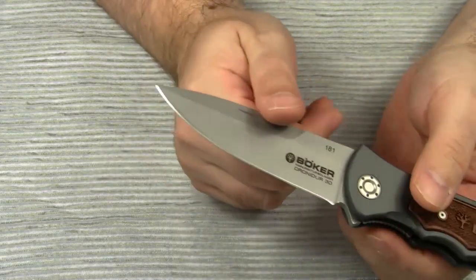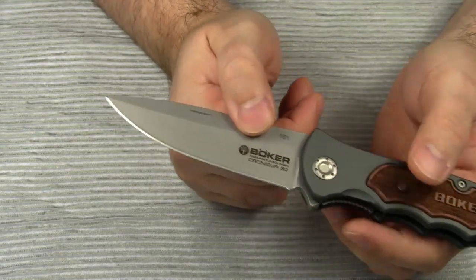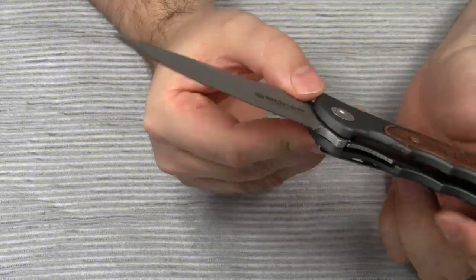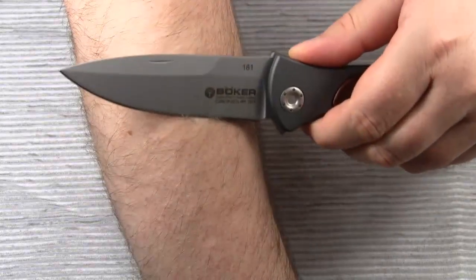As the blade steel Cronidor 30 is said to have fantastic edge holding characteristics. I haven't sharpened the knife yet, because it's almost unused, so time will tell what the edge holding is like. But I can tell you it's hair-popping sharp.